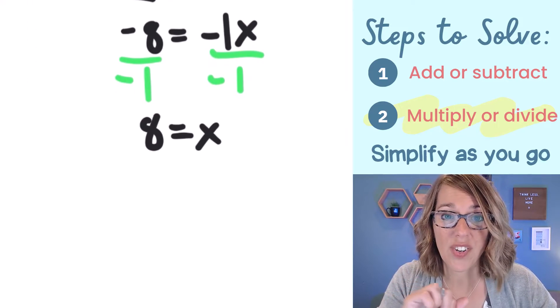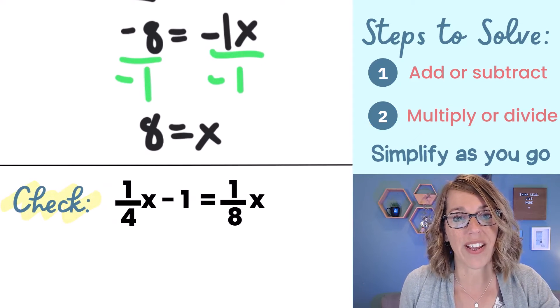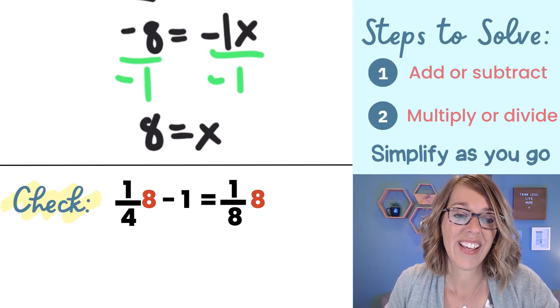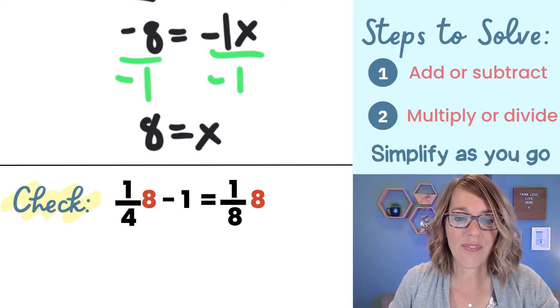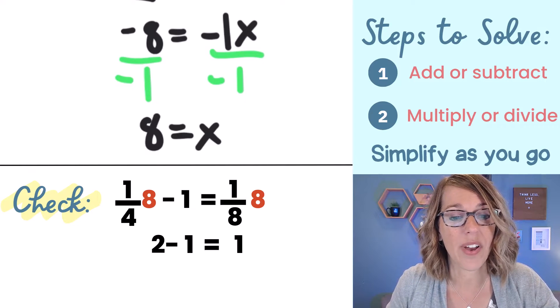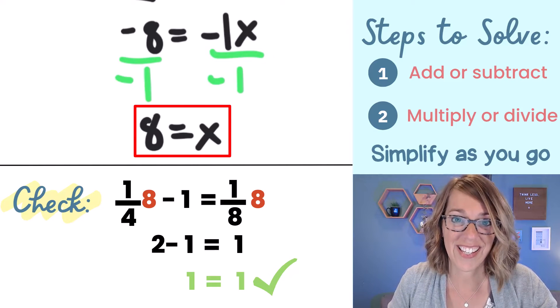Now with every equation we can check the solution. Let me bring our original equation back up here and we're going to replace the x's with our solution 8. Let's do the math. I can cancel the 4, I can cancel the 8 and I'm left with 2 minus 1 equals 1 which is totally true. So our solution is 8.